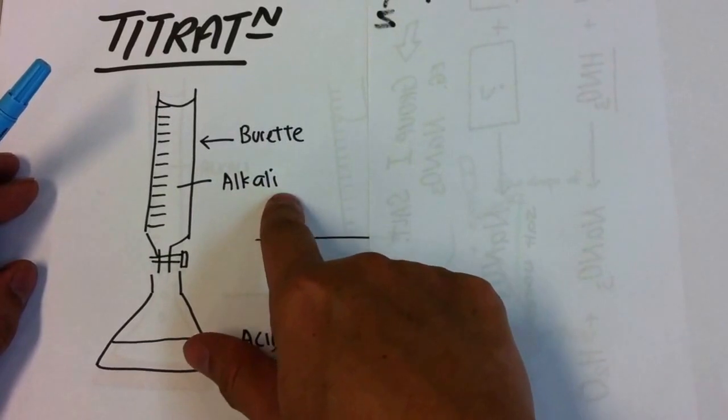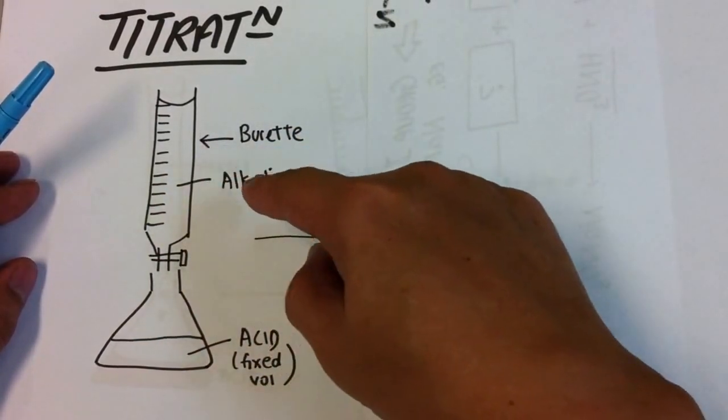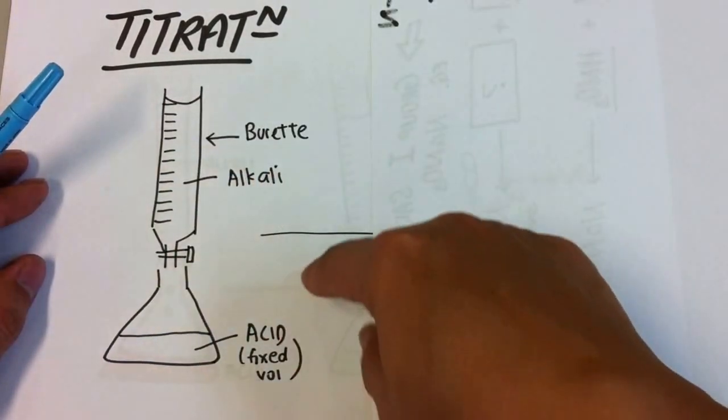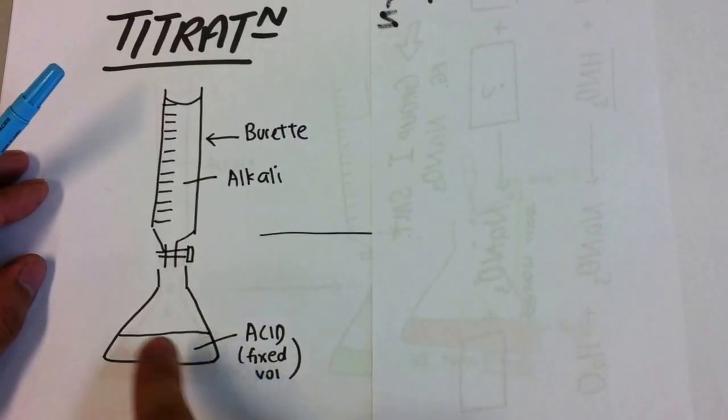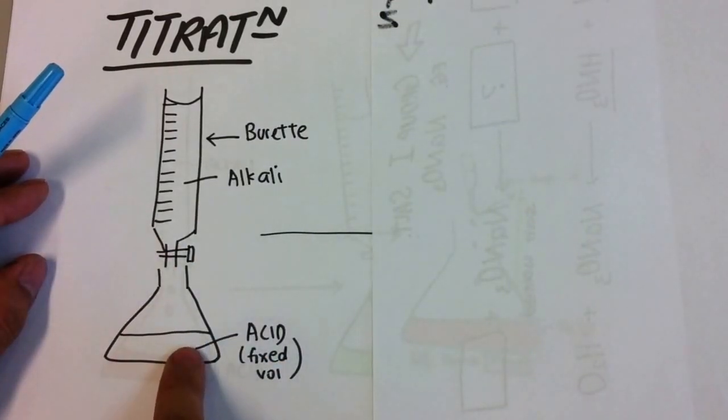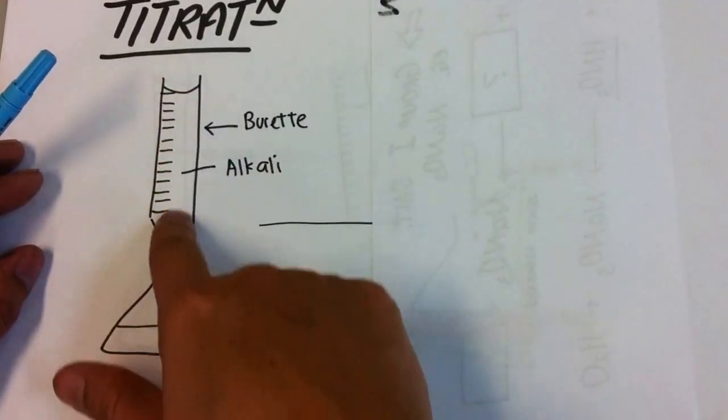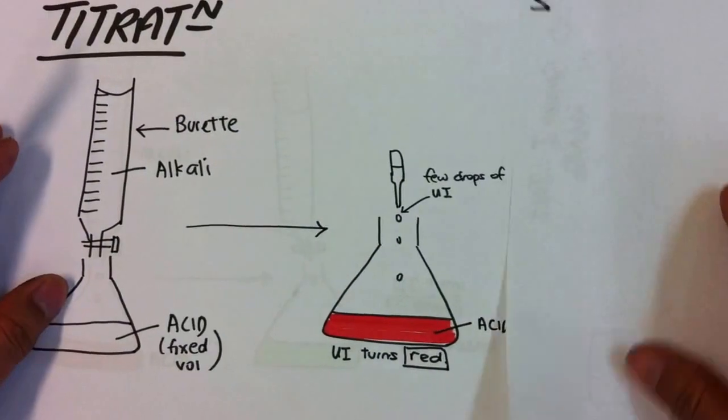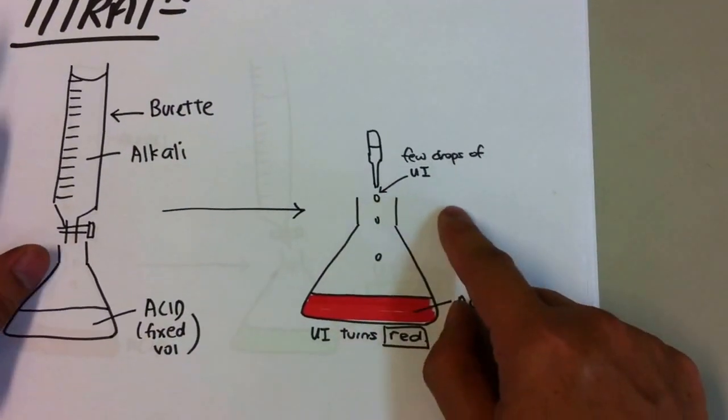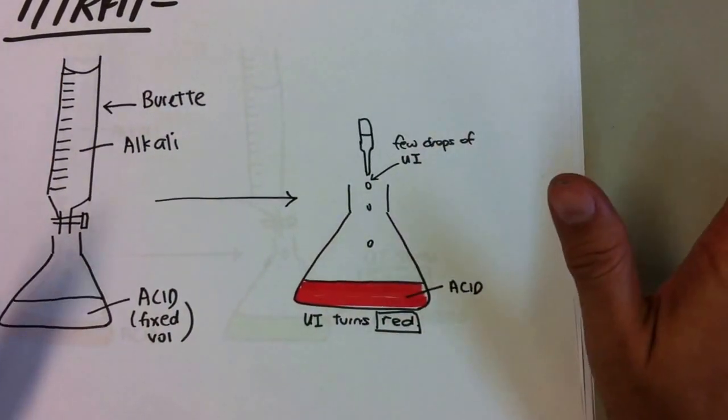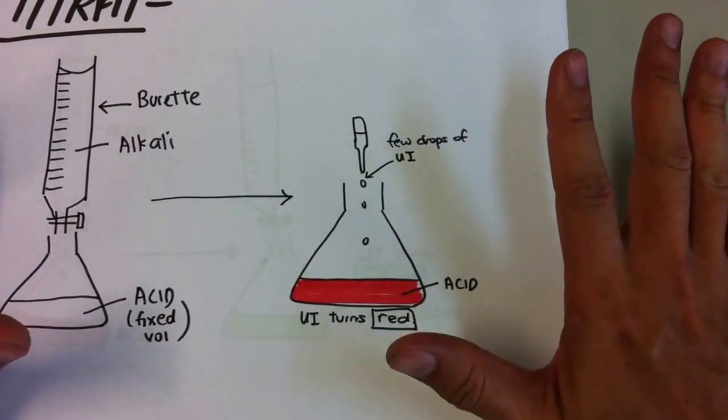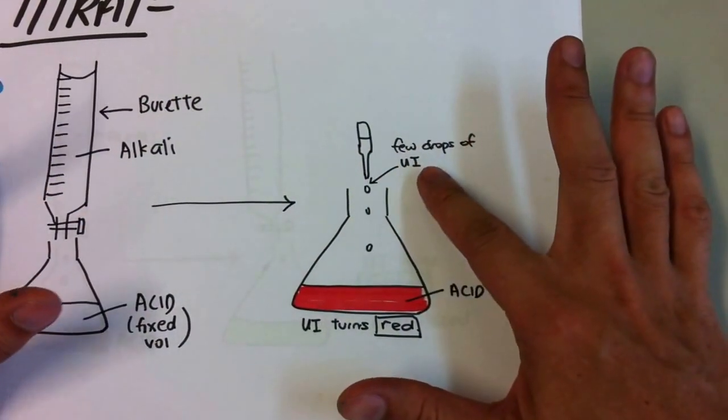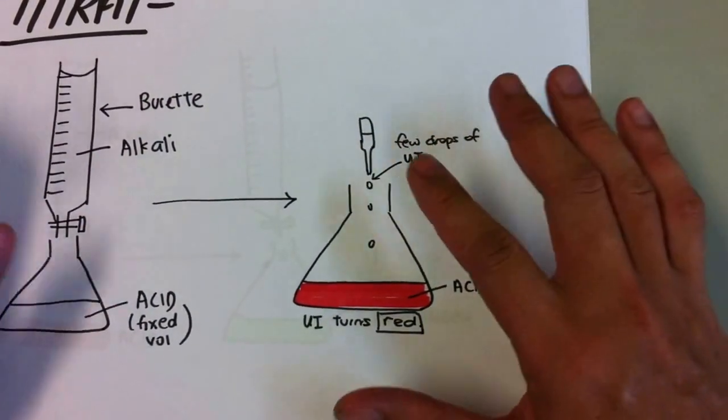So this is how it goes. Alkaline. In titration, the alkaline can be placed in the burette. And the acid can be placed in the conical flask or vice versa. So in this case, I will put the acid here. I will measure a fixed amount of acid. I will pipette it inside. Leave it there. It is fixed. The alkaline will be varying. And then what I will do is I will add a few drops of indicator. So in this case, let's use a universal indicator to just make the story easy. But in real life, we will not use universal indicator.